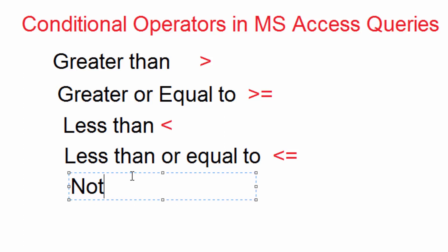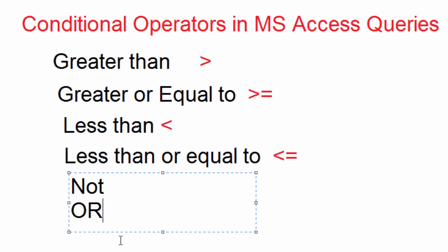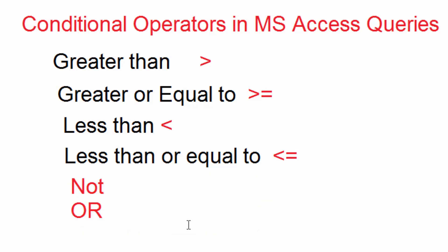There is also another operator called OR. Here you can search for, for example, students who scored exactly 70 or exactly 80. This OR operator is also used in Access queries. All these operators I will now show practically in MS Access.